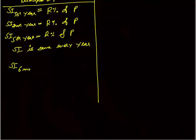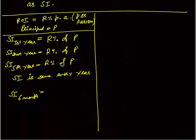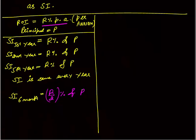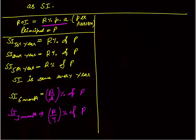What about simple interest for six months? Since R% is the annual rate of interest, for six months the rate becomes half, so SI for 6 months = R/2 % of P. For three months, which is one-fourth of a year, the rate is R/4, so SI for 3 months = R/4 % of P.